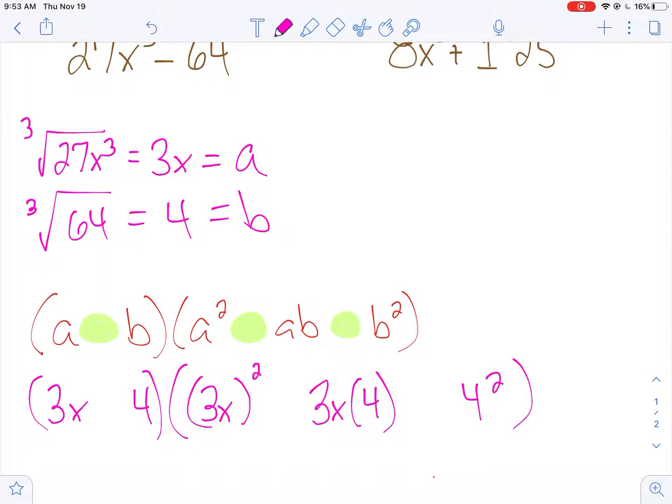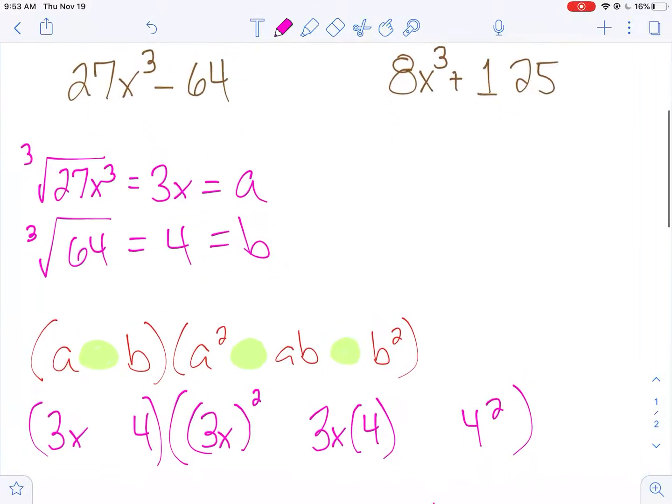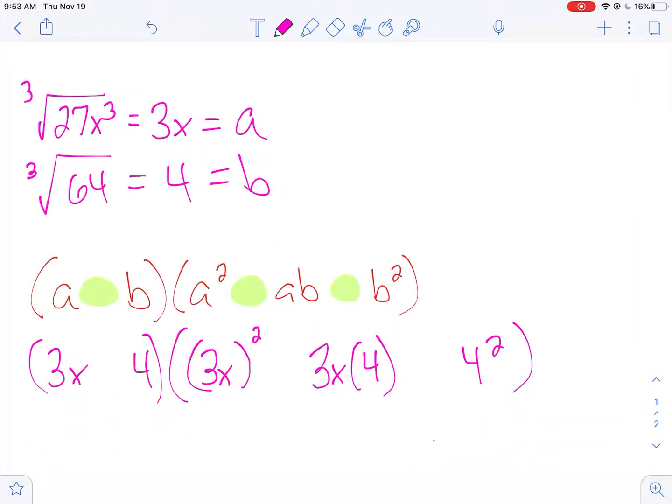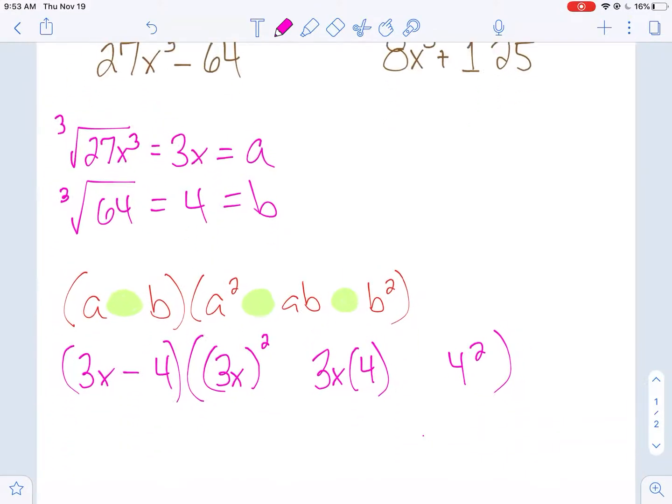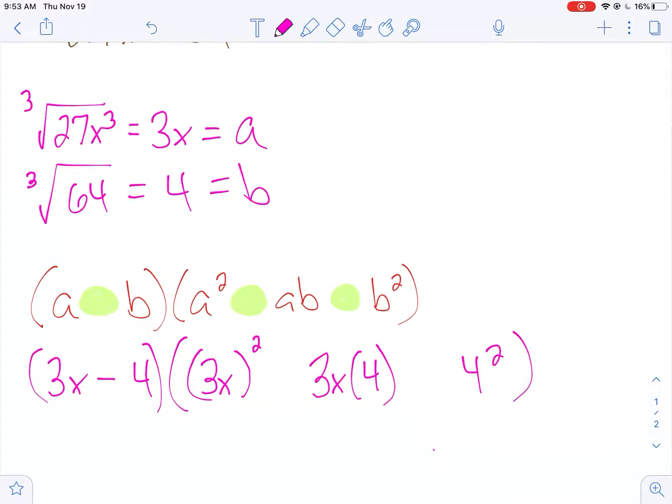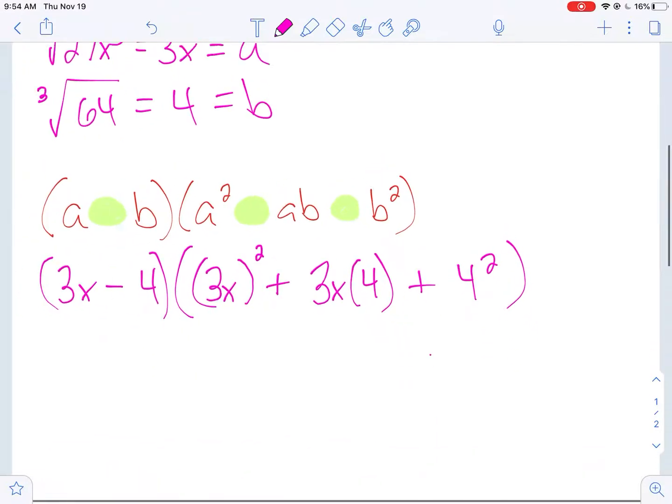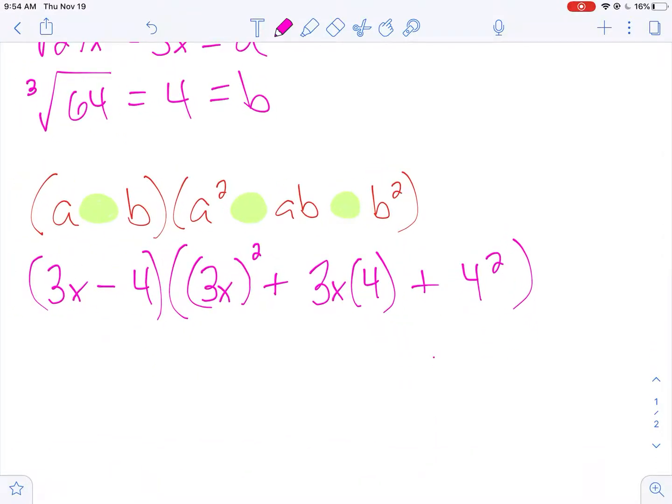Now where are my operations? This is where it comes in. Same - so since this is a subtraction problem, I'm going to use subtraction. Opposite - opposite of subtraction is addition. And then the last one, always positive plus. So I'm just about done factoring it. All I have to do is simplify it.